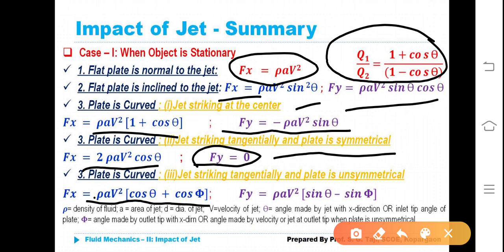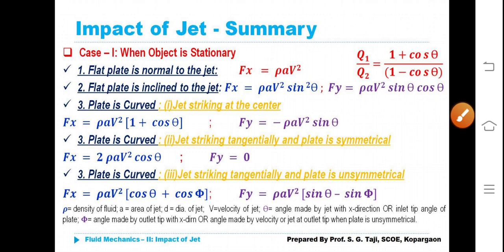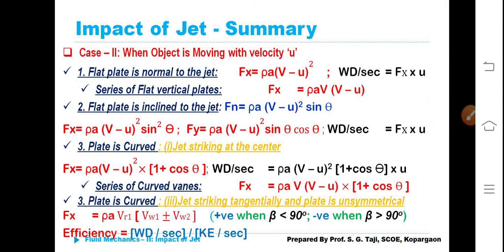Where rho is the density of the fluid, small a is the area of the jet, small d is the diameter of the jet, v is equal to velocity of the jet, theta is equal to angle made by the jet with the x-direction or at the inlet tip. Phi is equal to angle made by the jet at the outlet tip. This is just a summary at the end of the theoretical class.